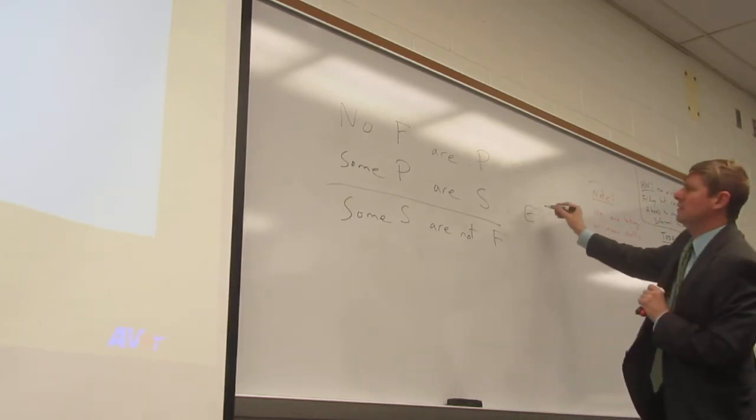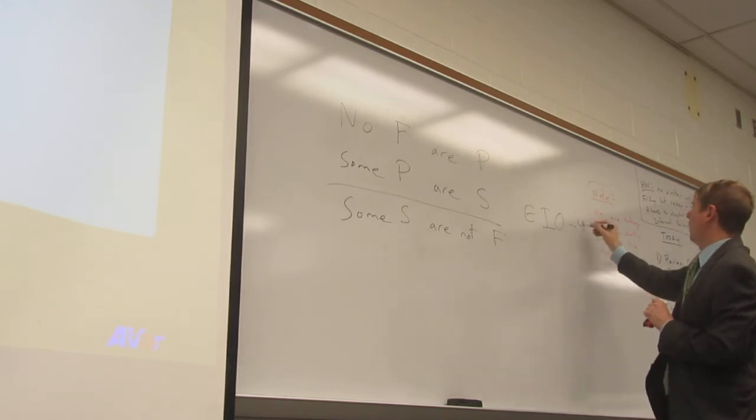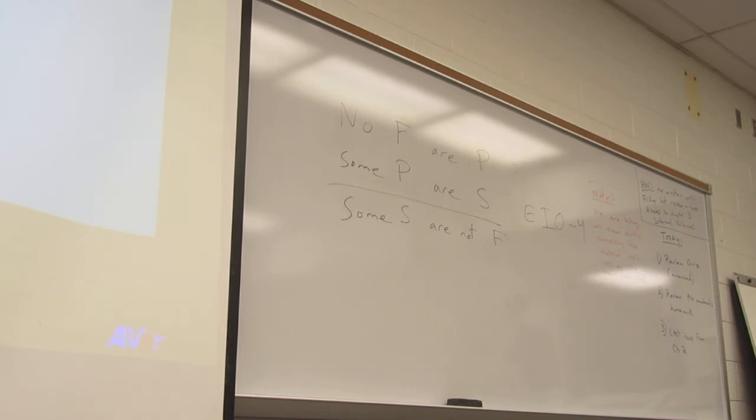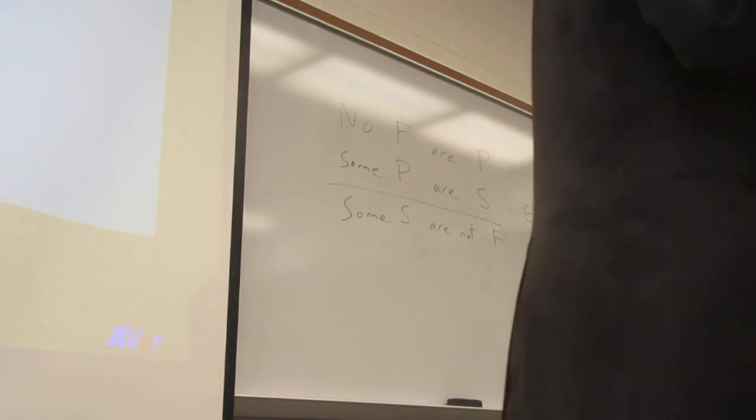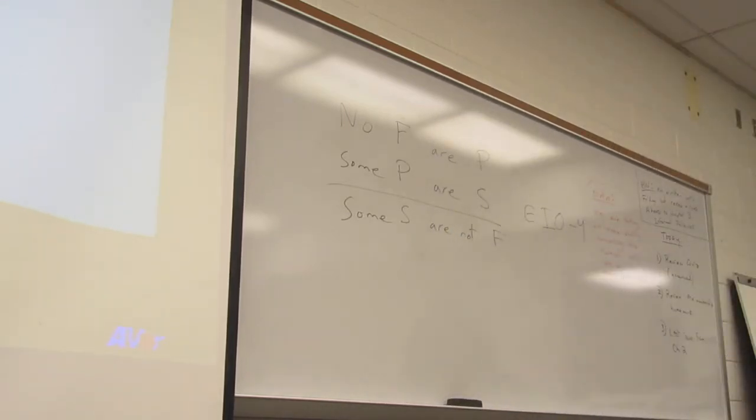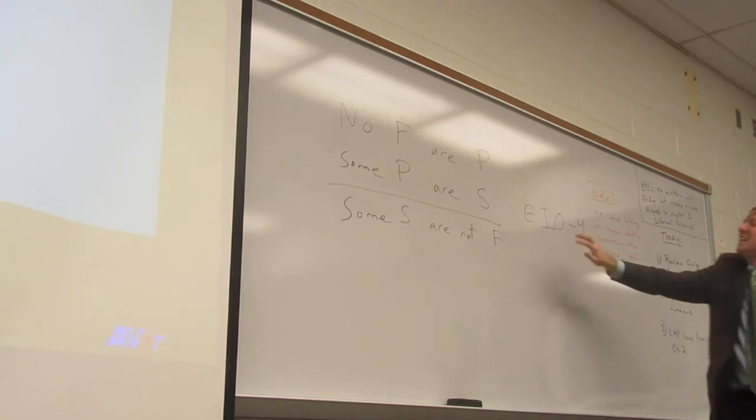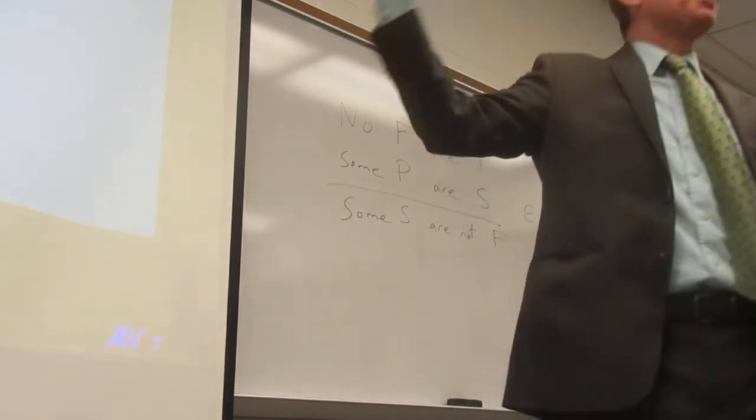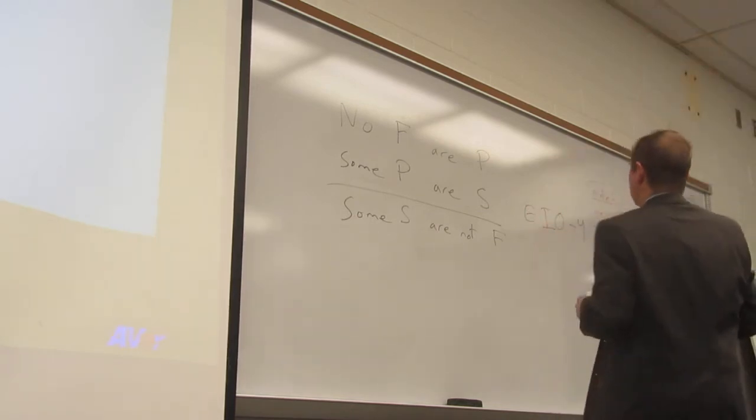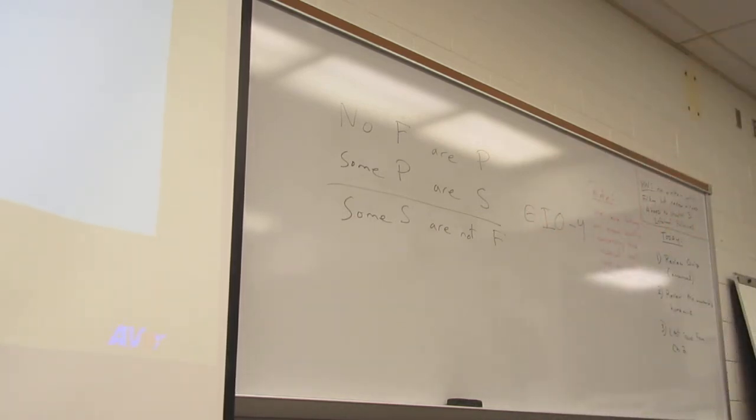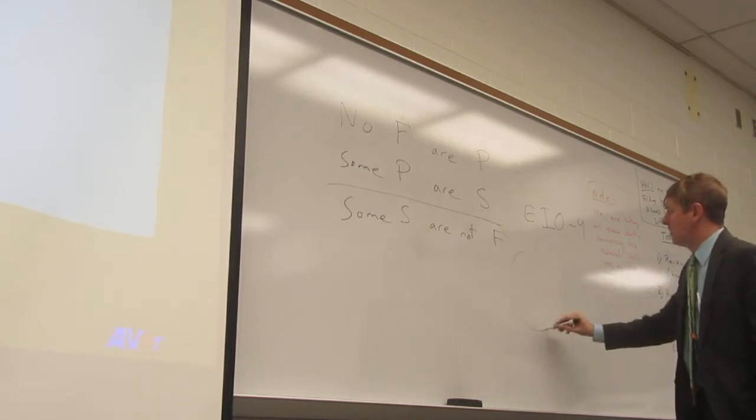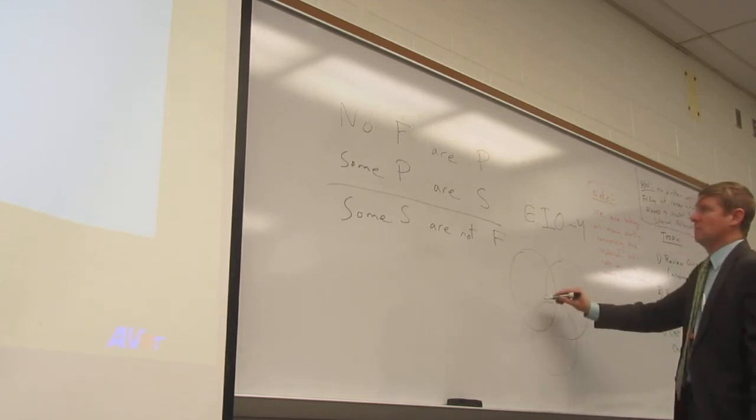So this one is an EIO4. And was it valid or was it invalid? For any of you who cheated and looked anything up online, you may have noticed that all EIO syllogisms are valid regardless of mood. How many of you looked that up? I'll understand if you did. But yeah, every EIO syllogism is valid. It is the only mood in all figures that is valid. But that's not a reason. In other words, you still either had to do the diagram or use the method.